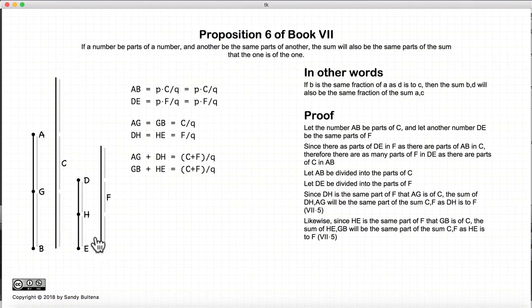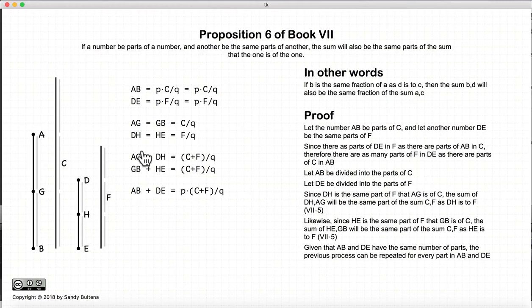Similarly, gb and he, the sum of them are the same fraction of c plus f. Again, proposition 5. So if we add these together, ag plus gb is ab, dh plus he is de.